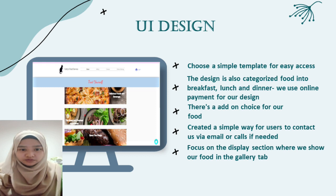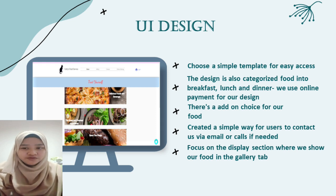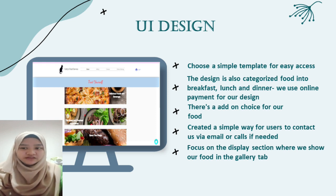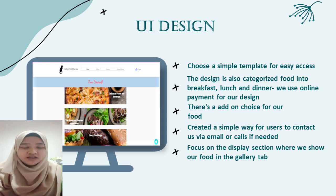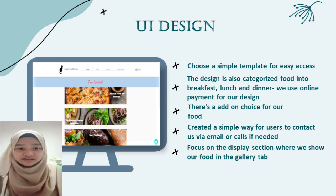Now we talk about our UI designs. We chose a simple template for easy access for users. The design categorizes food into breakfast, lunch and dinner. We use online payment in our design, and there is an add-on choice for food. We also created a simple way for users to contact us via email or calls if needed. We also focus on the display section where we show our food in the gallery tab. The detail of our website will be explained by Jason.